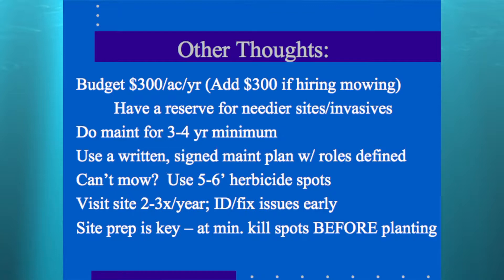We budget $300 an acre a year for this maintenance, not including mowing. Two mowings at $150 an acre would be another $300. Do this maintenance for three or four years. We use written, signed agreements with landowners — they know what they've agreed to. If you can't mow because it's too steep, rocky, or wet, increase your spot diameter to five or six feet. We're out on sites two or three times a year. If you're present, most issues can be dealt with at fairly low cost.